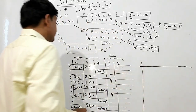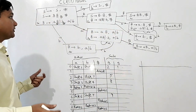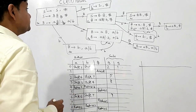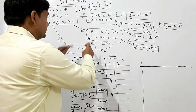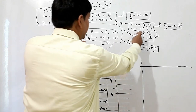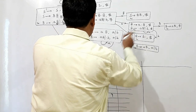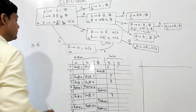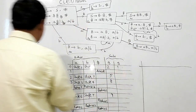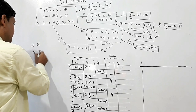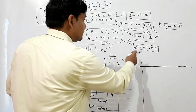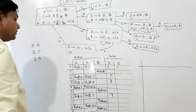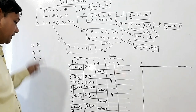Now we shall see which states can be merged. States 3 and 6 can be merged, states 4 and 7 can be merged, and states 8 and 9 can be merged. So 3 pairs of states can be merged here.